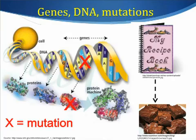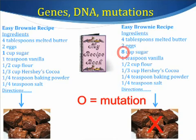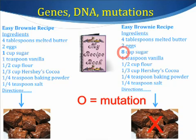We call these gene mistakes mutations. To make this clearer, let's think of a recipe for brownies. If the recipe calls for one cup of sugar and you add eight, the brownies will not come out correctly. It is the same with genes. Even one tiny change in a gene will result in a problem.